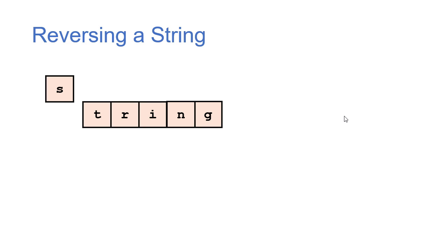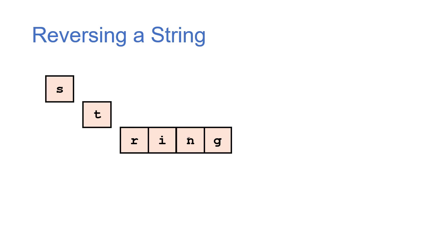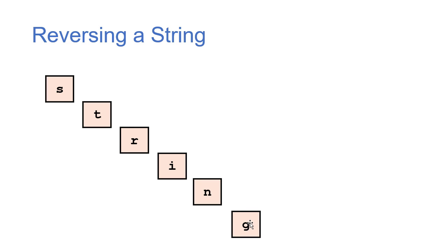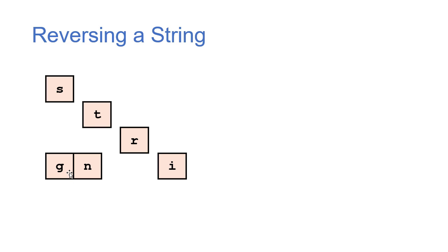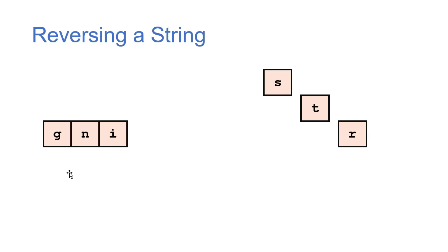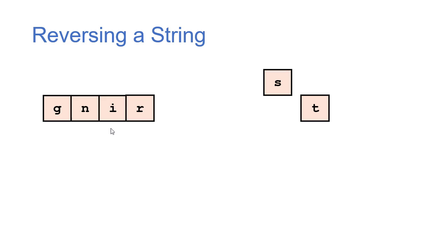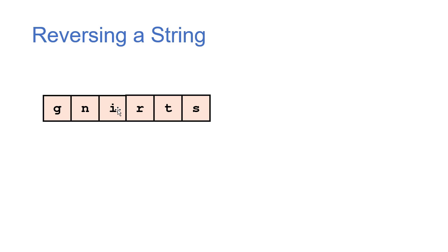Here we have a six-character string. We take the first character off and make a recursive call on the rest, continuing until the length of the remaining string is zero. Then we start building the string back up — the reversed substring gets returned to the caller and appended before whatever the first character was. We repeat this again and again until the entire string is reversed.